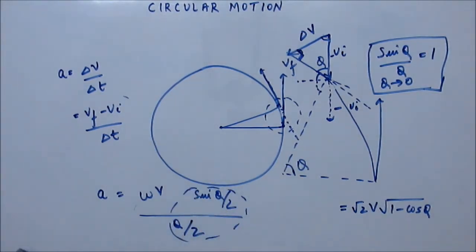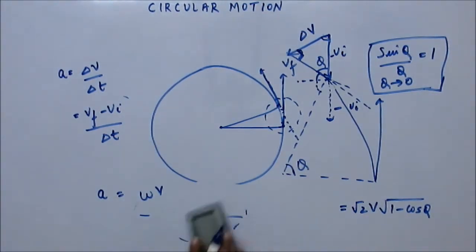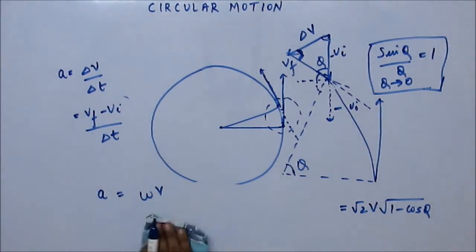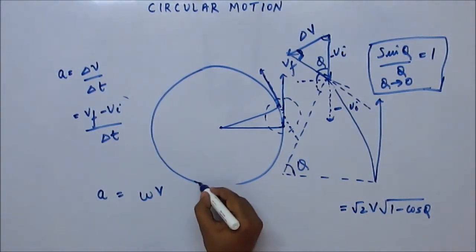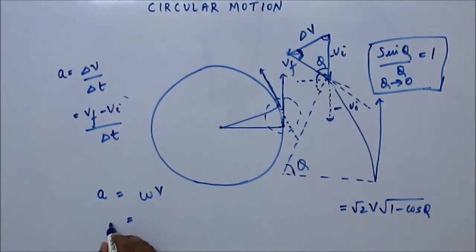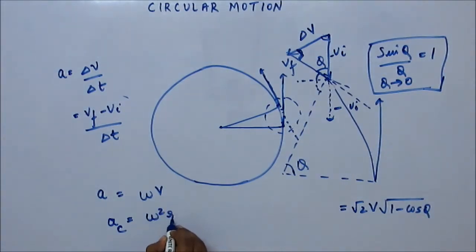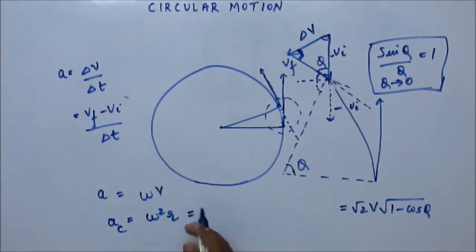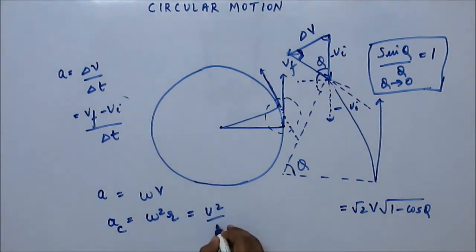So the whole limit is 1, and what you're left with is just ω into v. We have known before that v equals ω into r, so centripetal acceleration comes out as ω² into r. Instead of substituting v, we could substitute ω: ω is v upon r, so this comes out as v²/r.